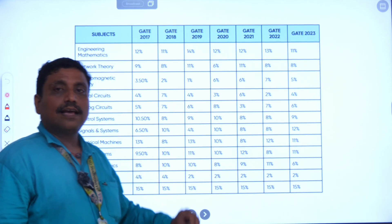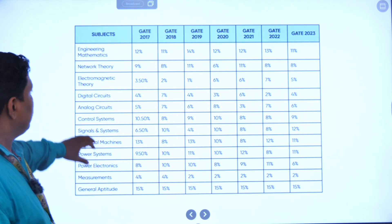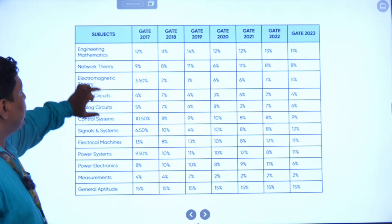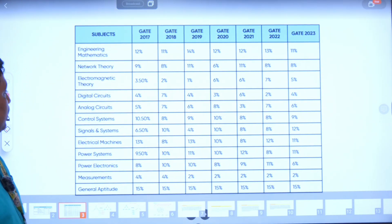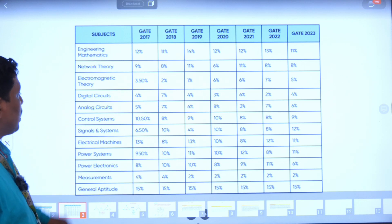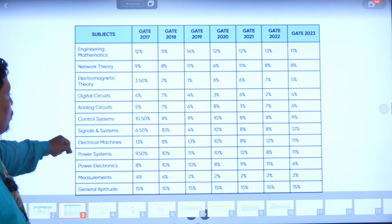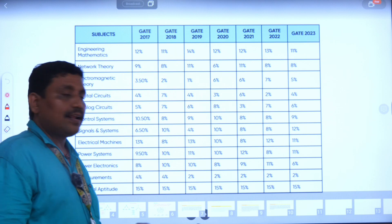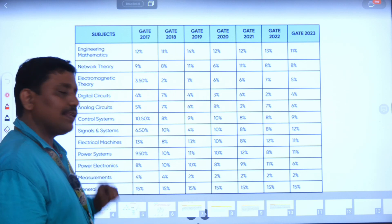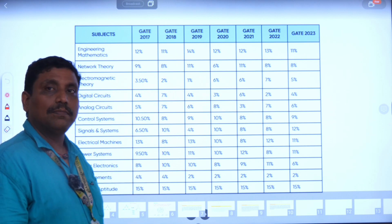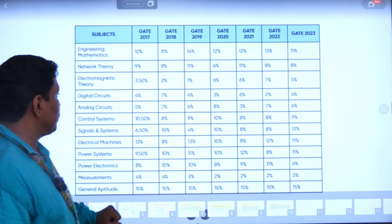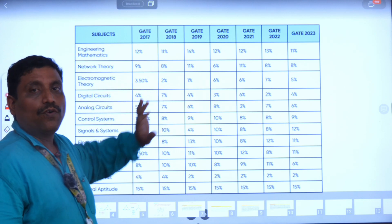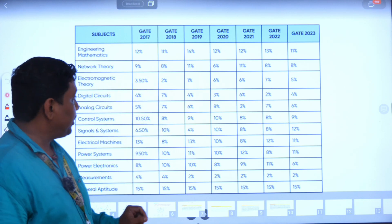I will explain on a board. The core subjects include: network theory, electromagnetic theory, digital circuits, analog circuits, control system, signal and systems, electrical machines, power system, power electronics, and measurements. These are all the important areas for the Electrical Engineering GATE course.